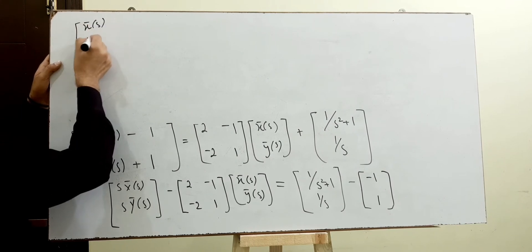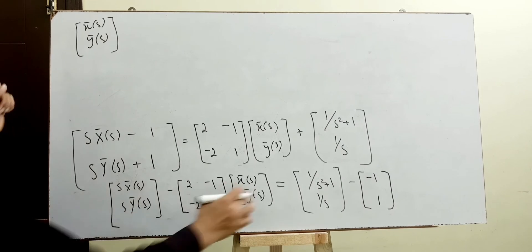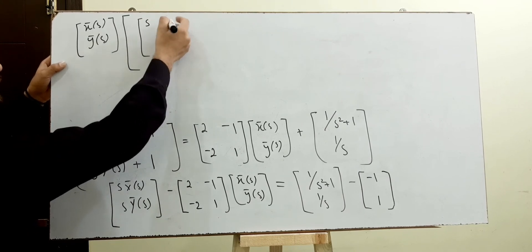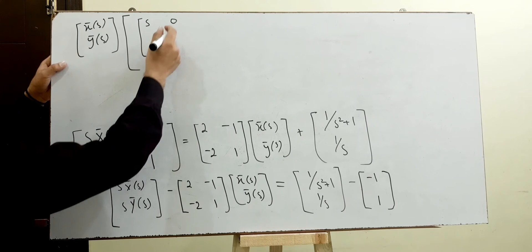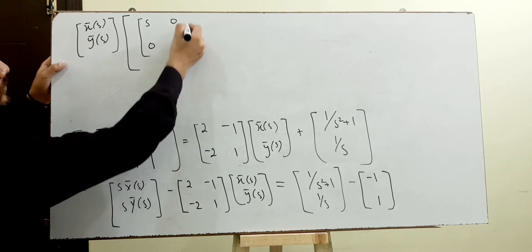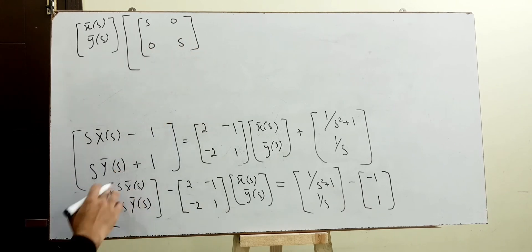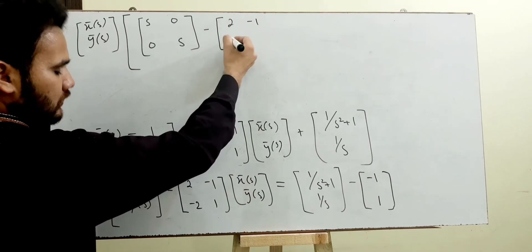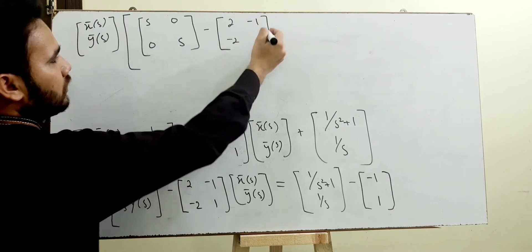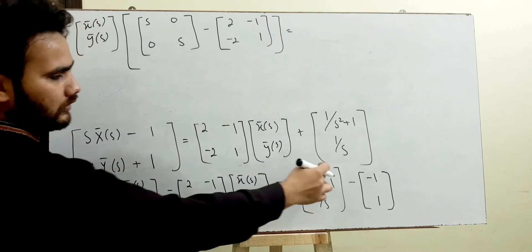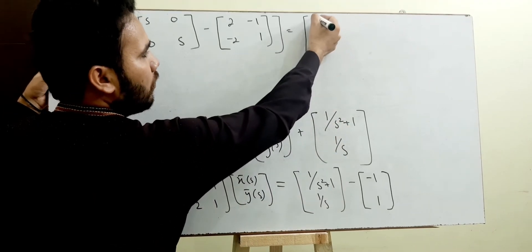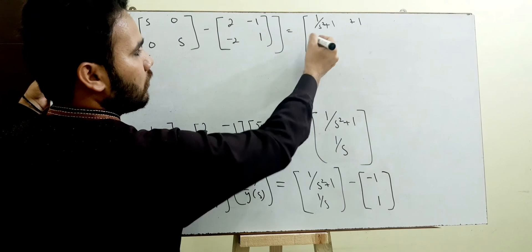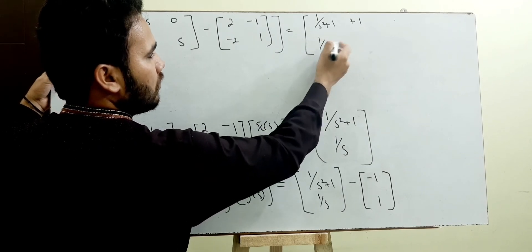Taking X̄(s) and Ȳ(s) as common factors, we write: [s, 0; 0, s] times [X̄(s); Ȳ(s)] minus [2, -1; -2, 1] times [X̄(s); Ȳ(s)] equals [1/(s²+1) + 1; 1/s - 1].